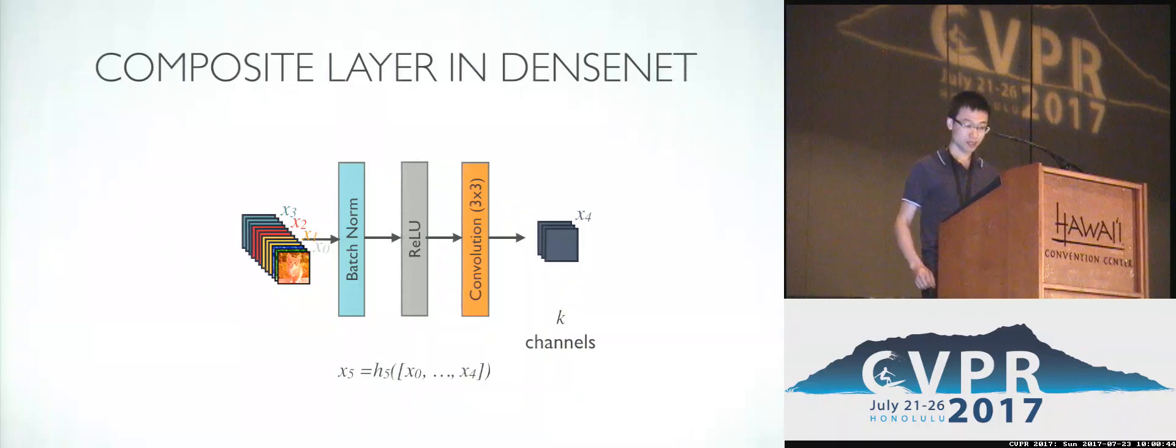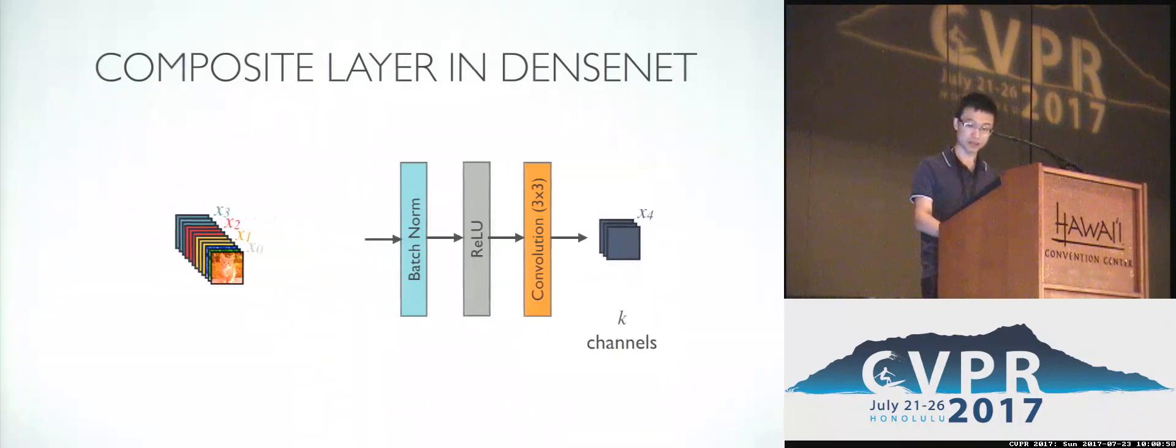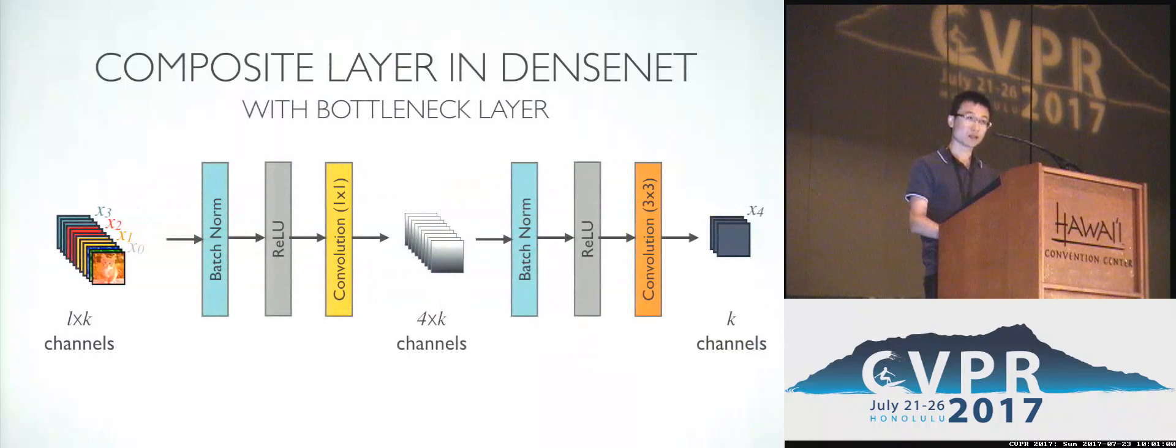As you may have noticed, as we are keeping concatenating features in the network, the input to deeper layers will become very wide, and this may introduce too much computation for deeper layers. To address this problem, we found using a relatively cheaper convolution with filter size 1 by 1 to first reduce the dimension of the channels to 4K could greatly improve the parameter efficiency and also computation efficiency.